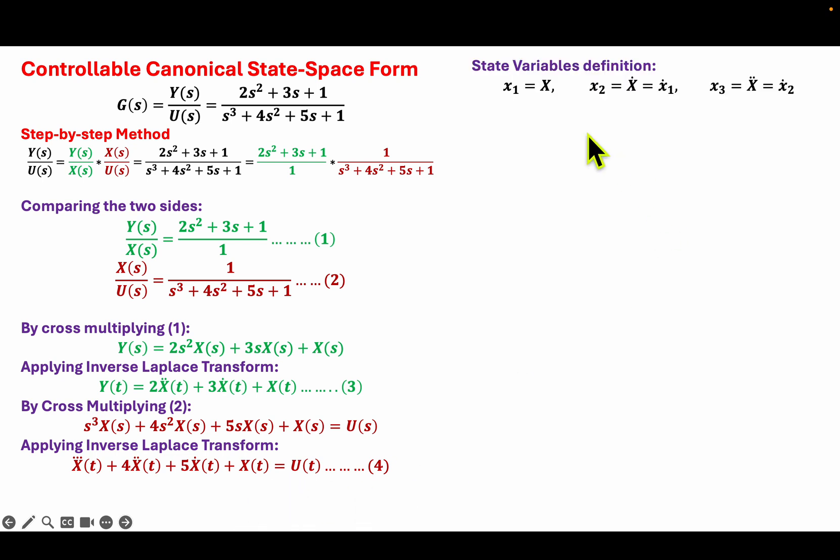So the next thing is the state variable definition. So since we are dealing with third order model, I need three states to fully define my state-space model. So I will name x1 to be x and then I will define x2 to be x dot.